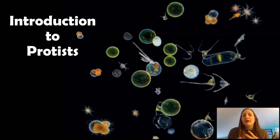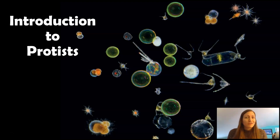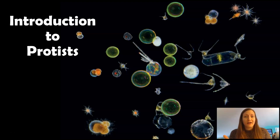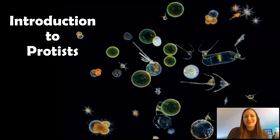Now that we've explored how life evolved — really the timeline in which life evolved — starting with bacteria and archaea, and then moving up to the evolution of eukaryotes, we have to start talking about protists, which are our first eukaryotic cells. While I talked about how we got a eukaryotic cell, those first eukaryotic species we saw were protists, and that's what we're going to explore in this lecture.